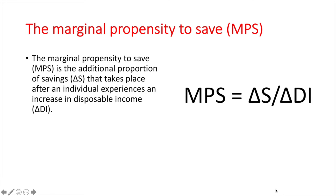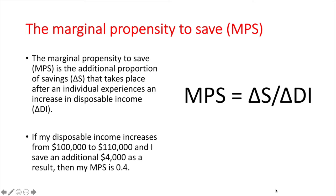The marginal propensity to save, or MPS, is the additional proportion of savings that takes place after an individual experiences an increase in disposable income. Using the same example, if my disposable income increases from $100,000 to $110,000 and I save an additional $4,000 from that $10,000 increase, then my MPS is 0.4.